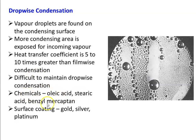Drop-based condensation can be maintained by applying chemicals on the surface such as oleic acid, or by surface coating with gold, silver, or platinum. However, surface coating with precious metals is very costly. Applying chemicals works only for the initial few hours — after continuous flow of vapor and liquid, the chemicals are washed away and film-based condensation resumes. So condensers are normally designed only for film-based condensation.